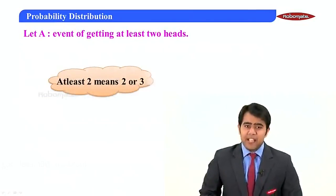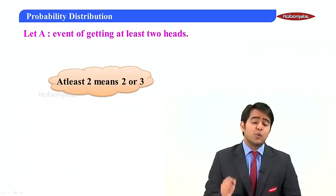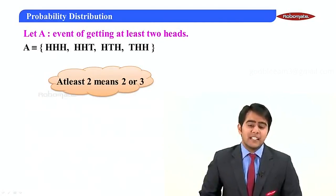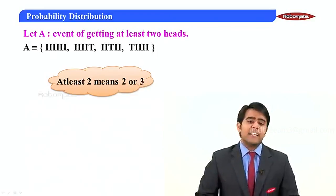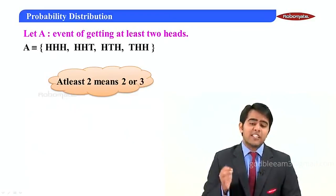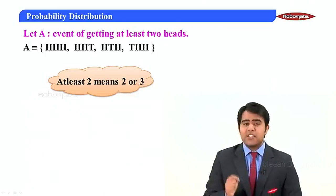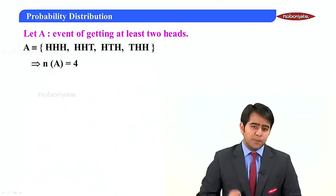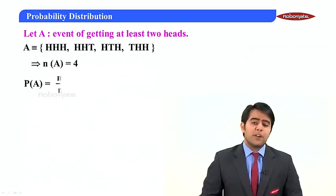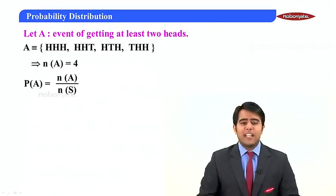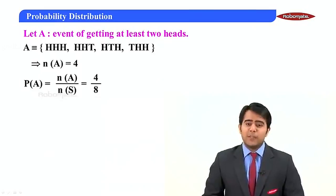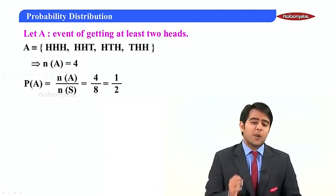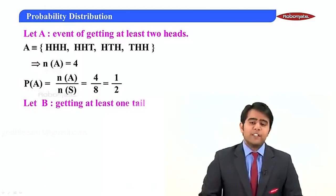For the first part, let A be the event of getting at least two heads. At least two means two or three heads. So A = {HHH, HHT, HTH, THH}, and n(A) = 4. Therefore, P(A) = n(A) / n(S) = 4/8 = 1/2.